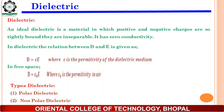If the electric field is measured in air, then ε = ε₀. Now for dielectrics: dielectrics are materials in which the positive and negative charges are so tightly bound they are inseparable, and hence have zero conductivity. In dielectrics the relation between electric flux density and electric field is D = ε₀εE, where ε is the permittivity of the medium. In free space, D = ε₀E, where ε₀ is the permittivity of air.